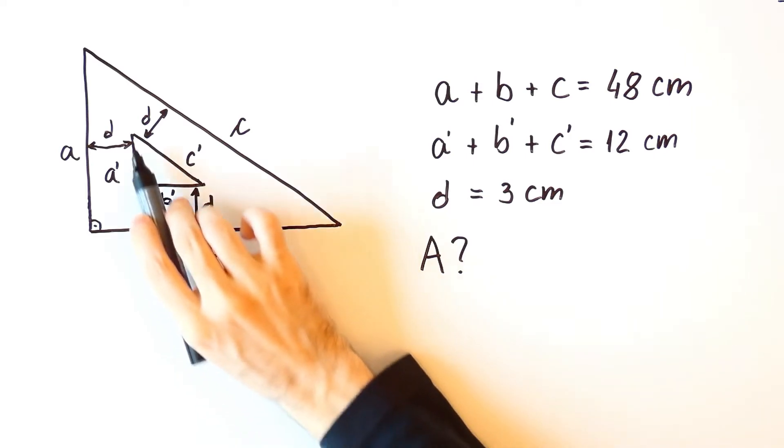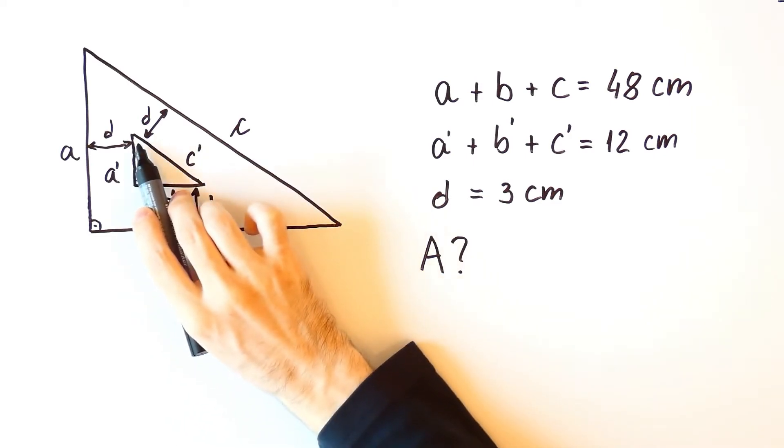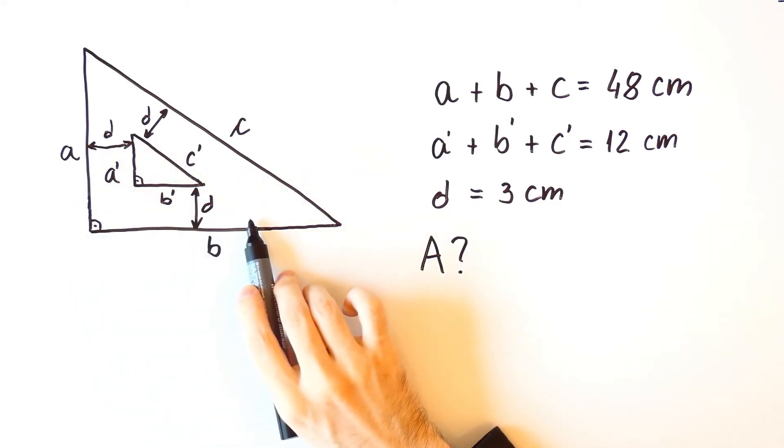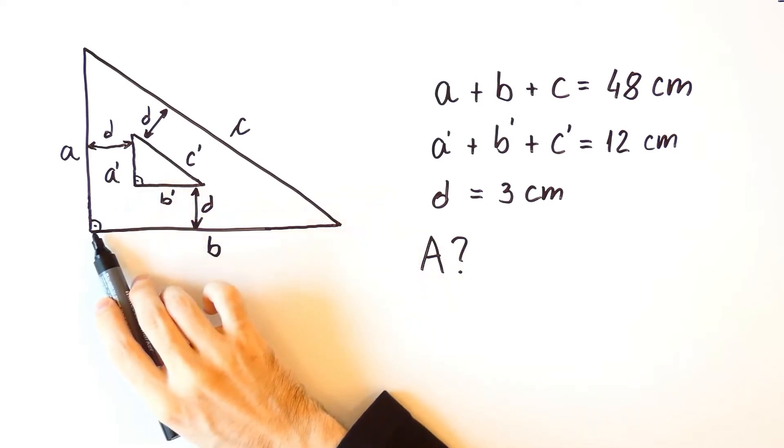We got this figure by removing this smaller triangle from the larger triangle. In this case, both are right triangles.